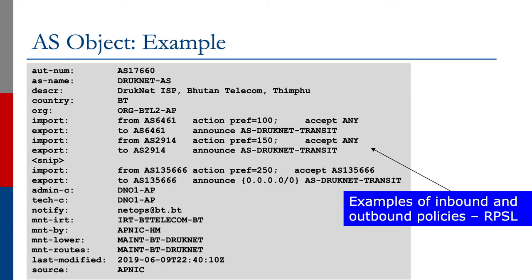The screen shows a typical AS object example, again taken from publicly available information for a network operator. It lists some import statements — which autonomous system it's importing prefixes from and how — and some export statements, which list what they're going to export to the different autonomous systems.